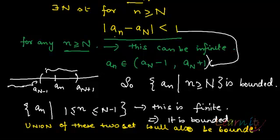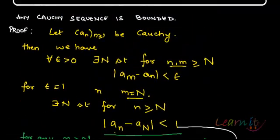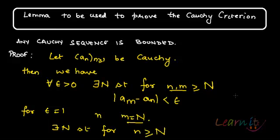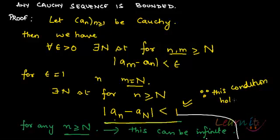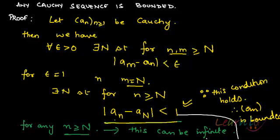So in the case where we have a Cauchy sequence, we can utilize the definition of Cauchy as we did here. Because this condition holds, it is bounded. So a_n is bounded — the set of terms of the sequence is actually a bounded set. This result will be utilized in defining and proving the Cauchy criteria.